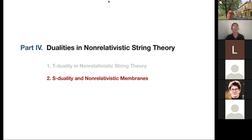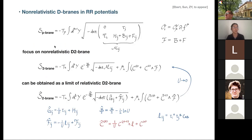Near the end of the lectures, I'd like to give a bit of information about S-duality in non-relativistic string theory, specifically focusing on S-duality for D2-branes. This leads to the idea of non-relativistic membrane theory, which connects to what we started with on the matrix theory side — essentially the DLCQ of M-theory. Taking the appropriate limit brings you back to the matrix theory conjecture.